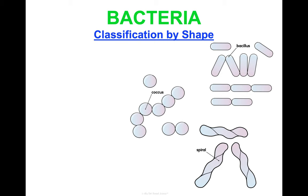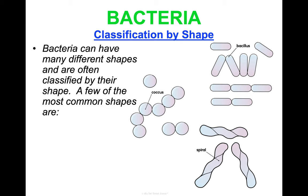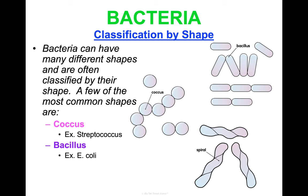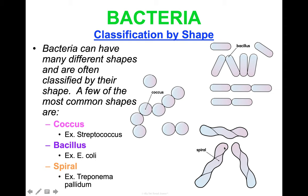Bacteria can be classified in a couple of different ways. One way is by their shape. The most common shapes are coccus — circular shapes — such as the bacteria that causes strep throat, meningitis, pinkeye, and bacterial pneumonia. Another shape is bacillus, which is rod-shaped; that's what E. coli, which causes some types of food poisoning, looks like. And then there's a spiral shape — Treponema pallidum, the bacteria that causes syphilis, has that spiral shape.